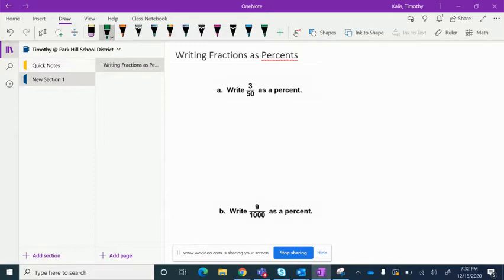In order to write fractions as percents, we have to write an equivalent fraction with 100 in its denominator because we know that percents are always out of 100.